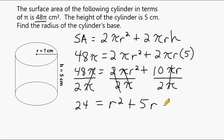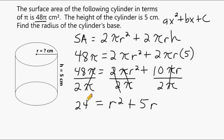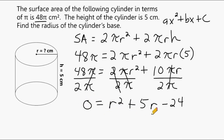At this point we should recognize we have a quadratic equation. The standard form of a quadratic is ax squared plus bx plus c. Here r squared is our ax squared term, 5r is our bx term, and 24 is our c term. So we move 24 to the right-hand side by subtracting 24, giving us 0 equals r squared plus 5r minus 24.